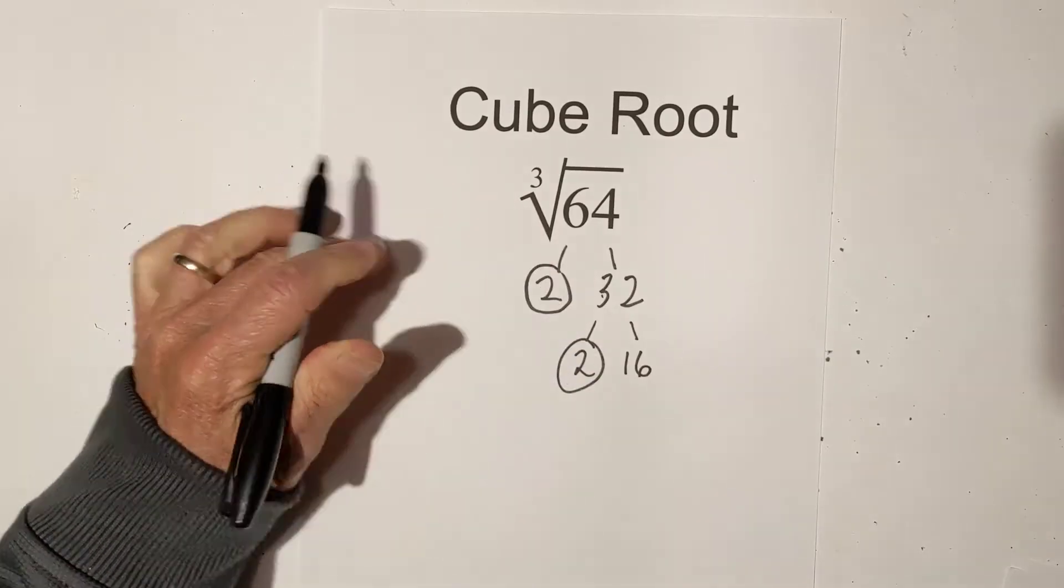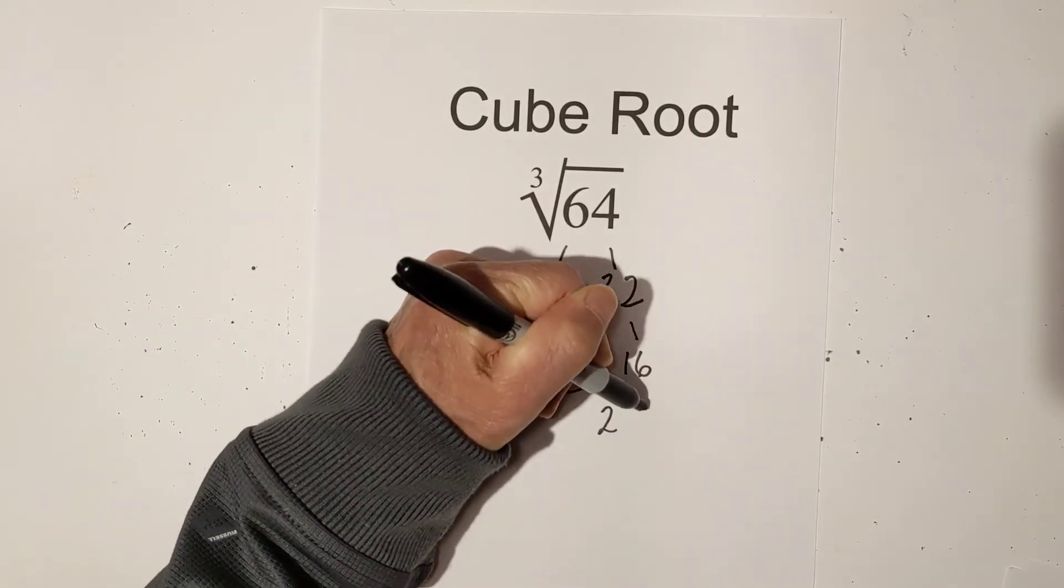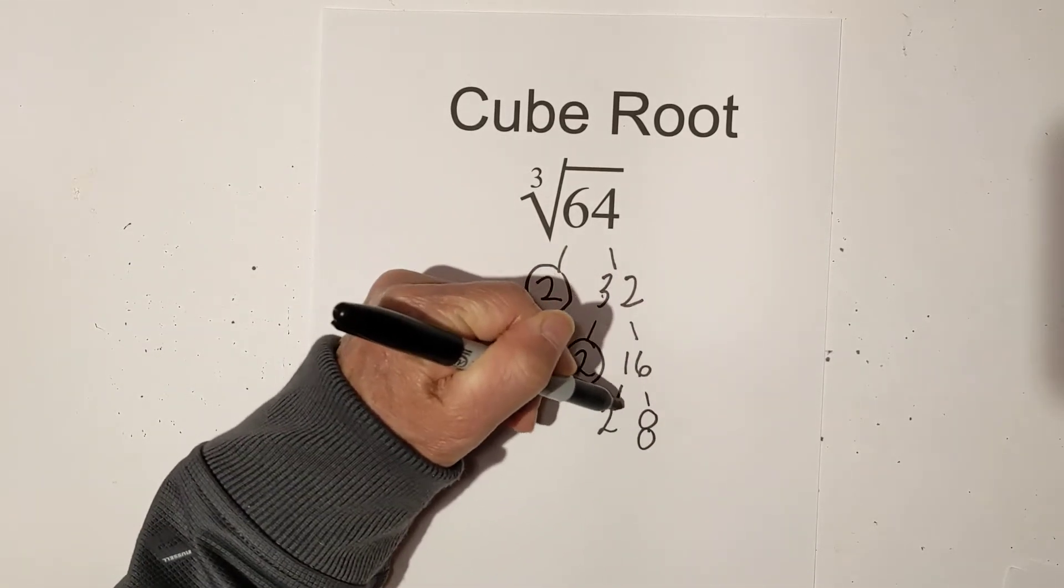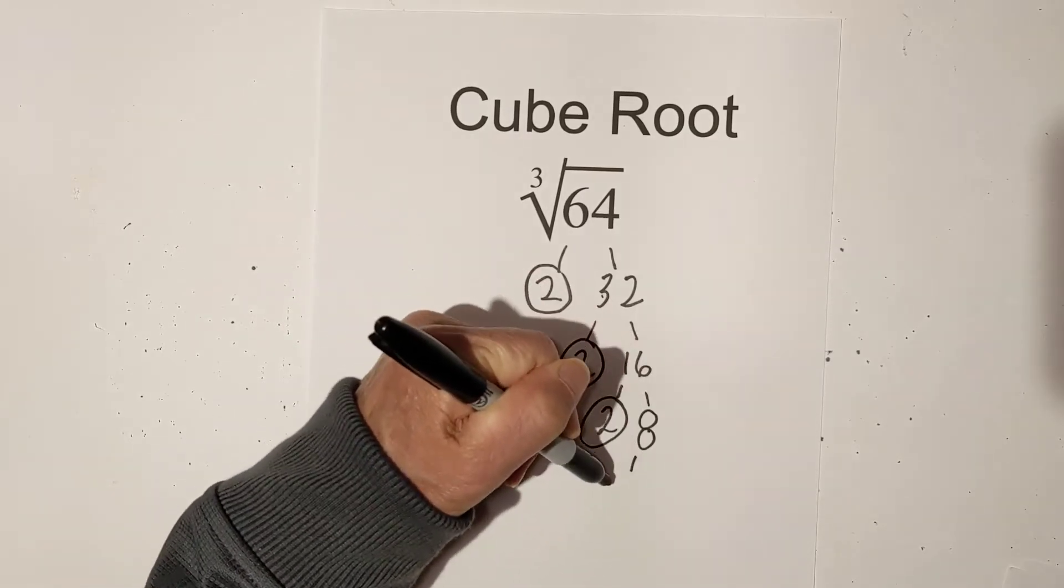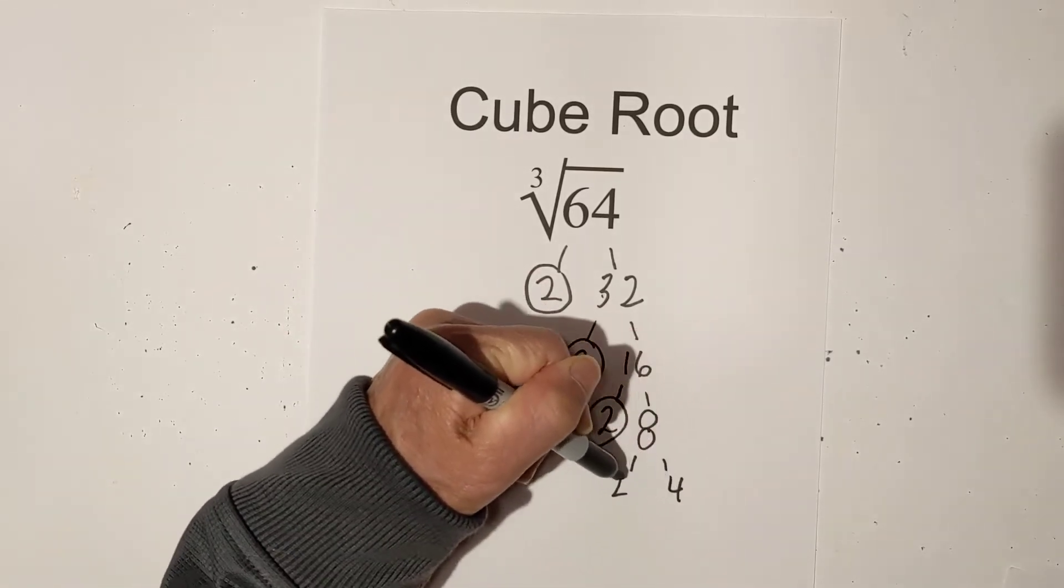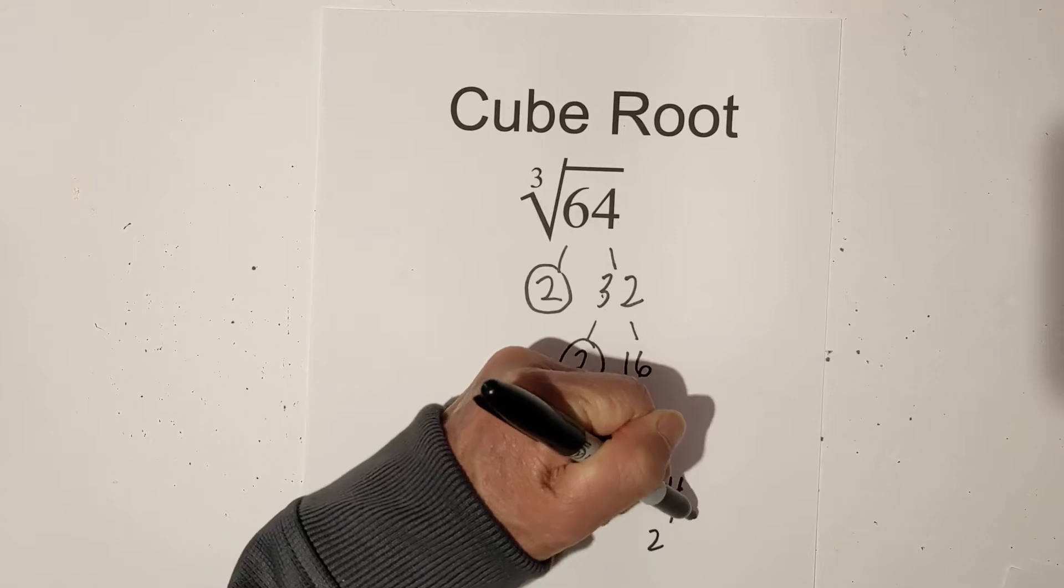Again, I'm going to circle the 2 because it's prime. Now 2 times 8. Same thing, circle the 2. 2 times 4, and then 2 times 2.